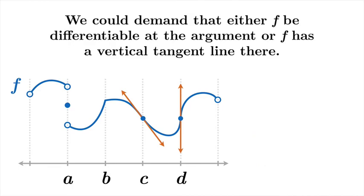So we could demand that either f be differentiable at the argument or f has a vertical tangent line there. So now we get the first two would fail to be the locations of inflection points. But the last two cases, we'd be okay. And this might make you happy, makes me happy. I'm pretty satisfied with this condition.